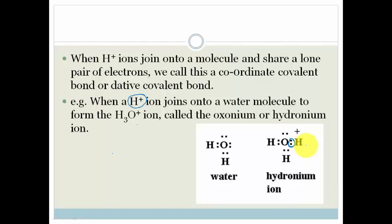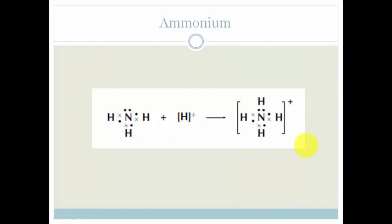Let's look at another example. Another example is if we have ammonium. Ammonium is formed when we have ammonia, which is actually NH3, and what happens is we have a hydrogen plus ion again.